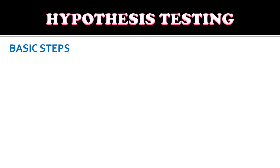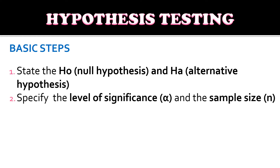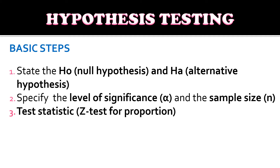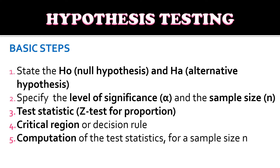We will be using the same six steps for hypothesis testing. Step one: identify or restate the null hypothesis and the alternative hypothesis. Step two: specify the level of significance and the sample size. Step three: identify the test statistic — for this topic, it's the Z-test for proportion. Step four: identify the critical region for the decision rule. Step five: compute for the test statistic. Step six: make the decision and conclusion.